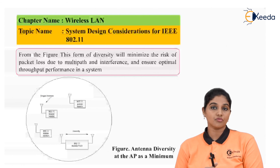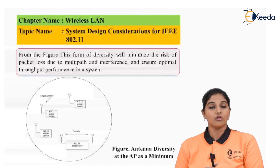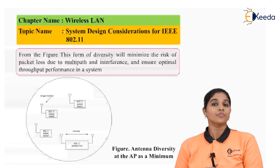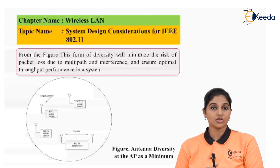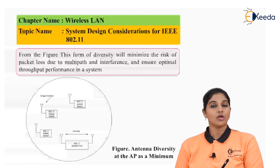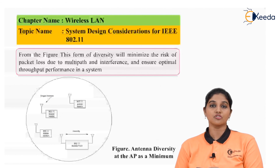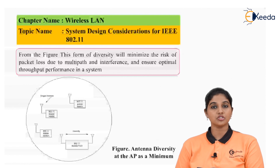In summary, the various factors required to consider while implementing or designing a wireless LAN network include antenna diversity, interference, multipath, multipath channel model, and cost of the network, among many other factors. I hope you understand this topic of system considerations for wireless LAN networks. Thank you very much for watching this video.